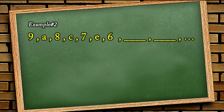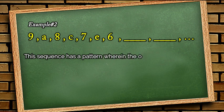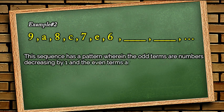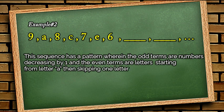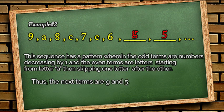In the next sequence, ang odd terms, 1st, 3rd, 5th term and so on ay numbers starting from 9 and decreasing by 1. So ang 1st term ay 9, ang 3rd term ay 8, ang 5th term ay 7 and so on and so forth. Sa even terms naman, ang 2nd term ay A, then ang 4th term ay C, which clearly shows na naglalaktaw ng isang letter. Therefore, the next terms are G and 5 respectively.